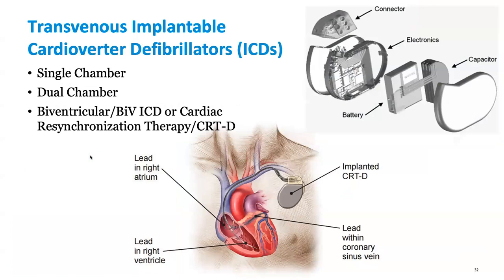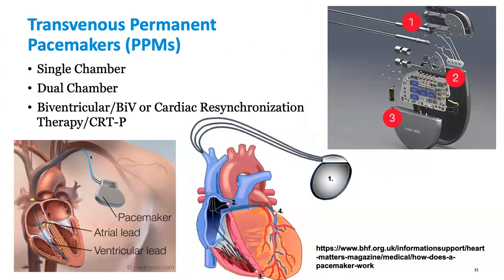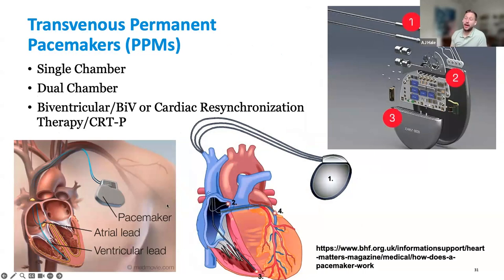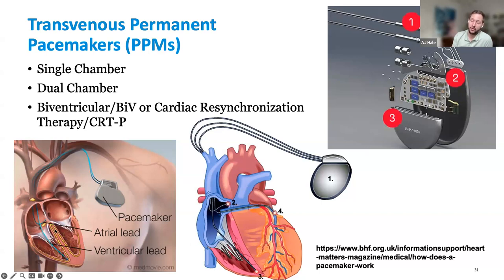Dr. Daffy is asking about left bundle branch pacing. For left bundle, you're trying to reach the conduction pathway on the left side — you take your RV lead and drill into the septum, trying to activate the left bundle. The idea is that you're working with the heart's own conduction pathway, which is more streamlined and allows for a more narrow pace complex and better cardiac tissue engagement.